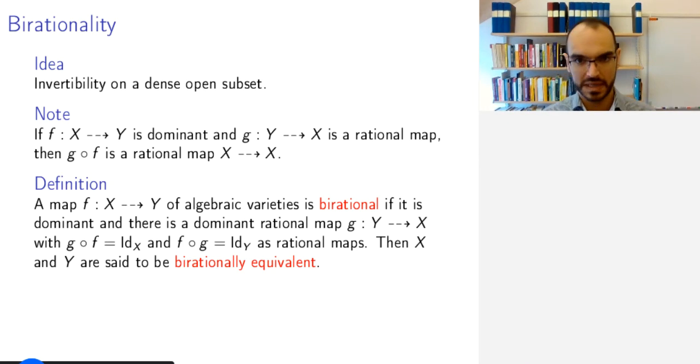So when you have a birational map between X and Y, you call X and Y birationally equivalent.